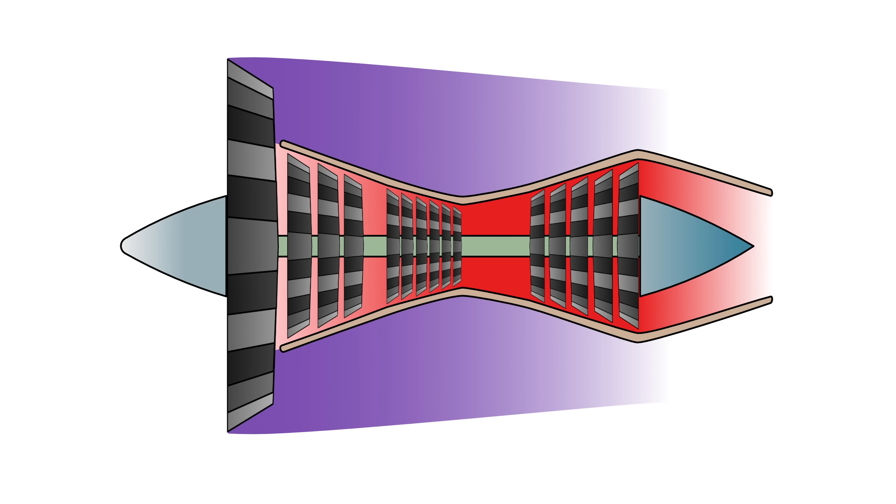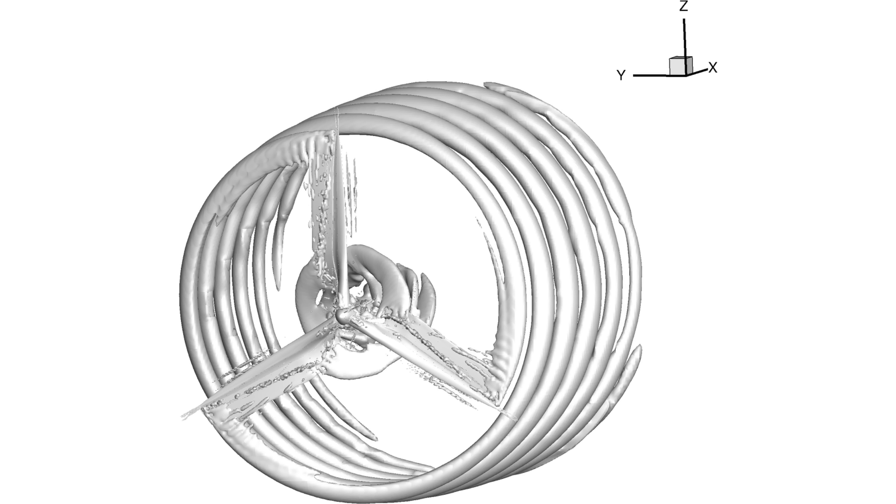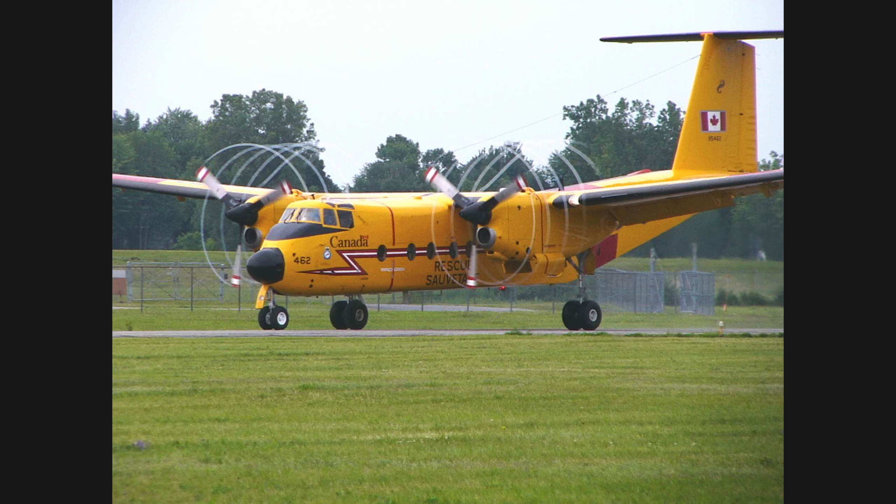Without a duct, this pressure would dissipate into the atmosphere. The second reason is the duct interferes with blade tip vortices and thus helps minimize the blade tip losses that open propellers experience.